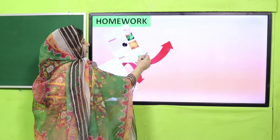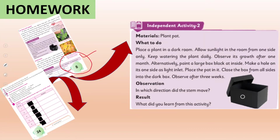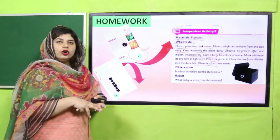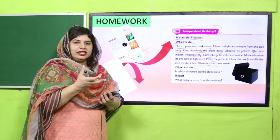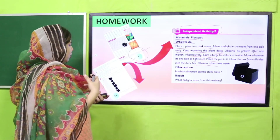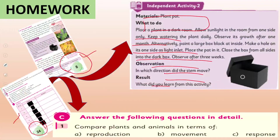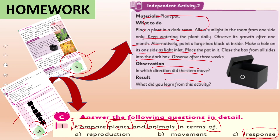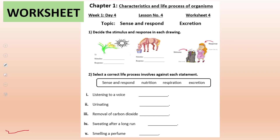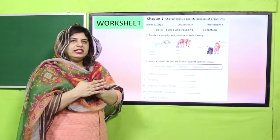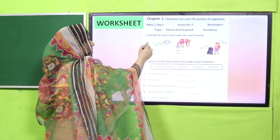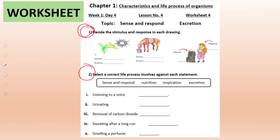You are given homework. On page number 8 of your Cabinet Scholar Series Book 4, there is an independent activity where you will conduct a sense and response activity at home, observing how plants grow towards light and how their roots move towards water. Also, on page number 24, there is an exercise in Part C with questions to compare plants and animals in terms of their responses. A worksheet is also available regarding how plants and animals sense and respond, and how they excrete — attempt it to revise and practice your lesson.